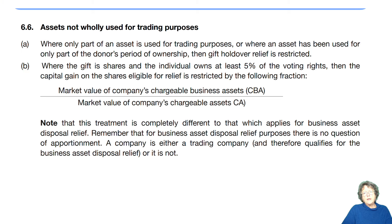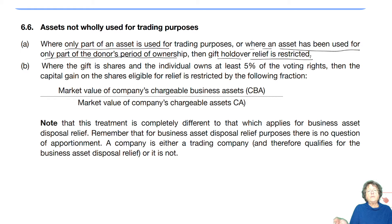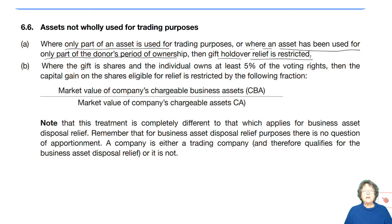Sometimes when assets are transferred from one person to another — donor to donee — under the gift relief rules, not all the assets that are transferred are actually being wholly used for the trade. Where only part of the asset is being used, or where an asset has been used for only part of the donor's ownership period, then there is a restriction, because this is a relief for business assets. If you've got investment assets, they cannot qualify.